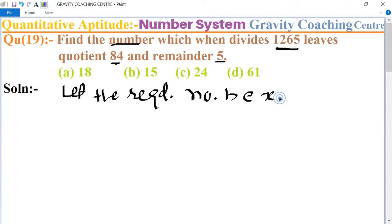We know that the formula is: dividend equals divisor into quotient plus remainder. So here, the dividend is 1265.